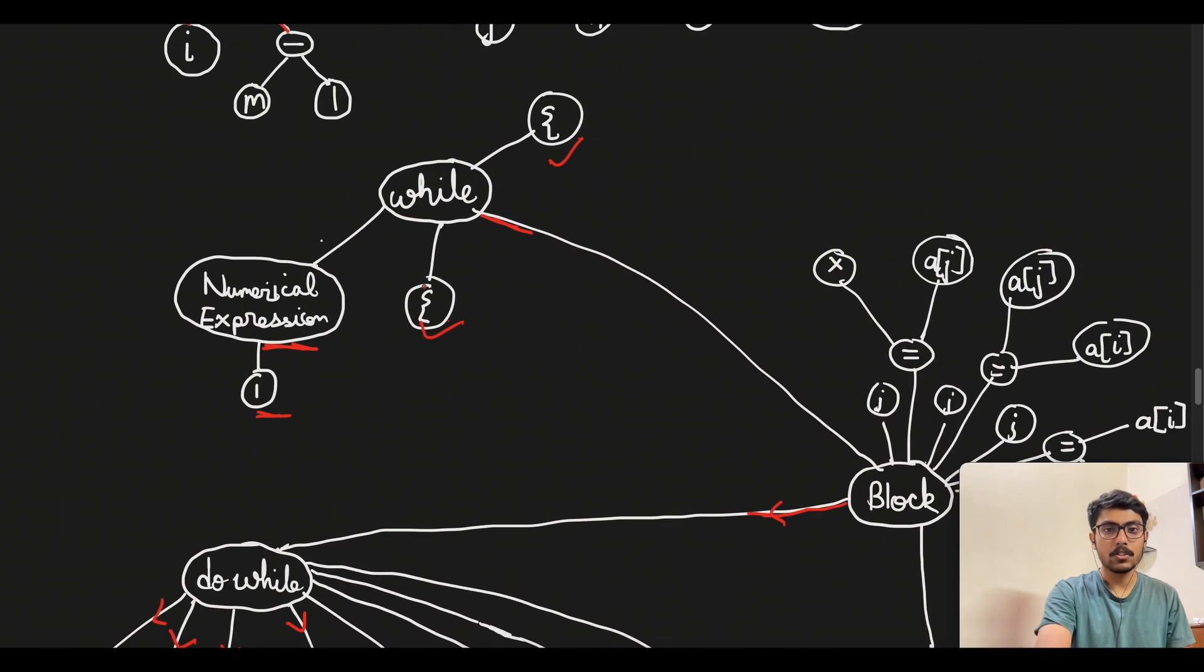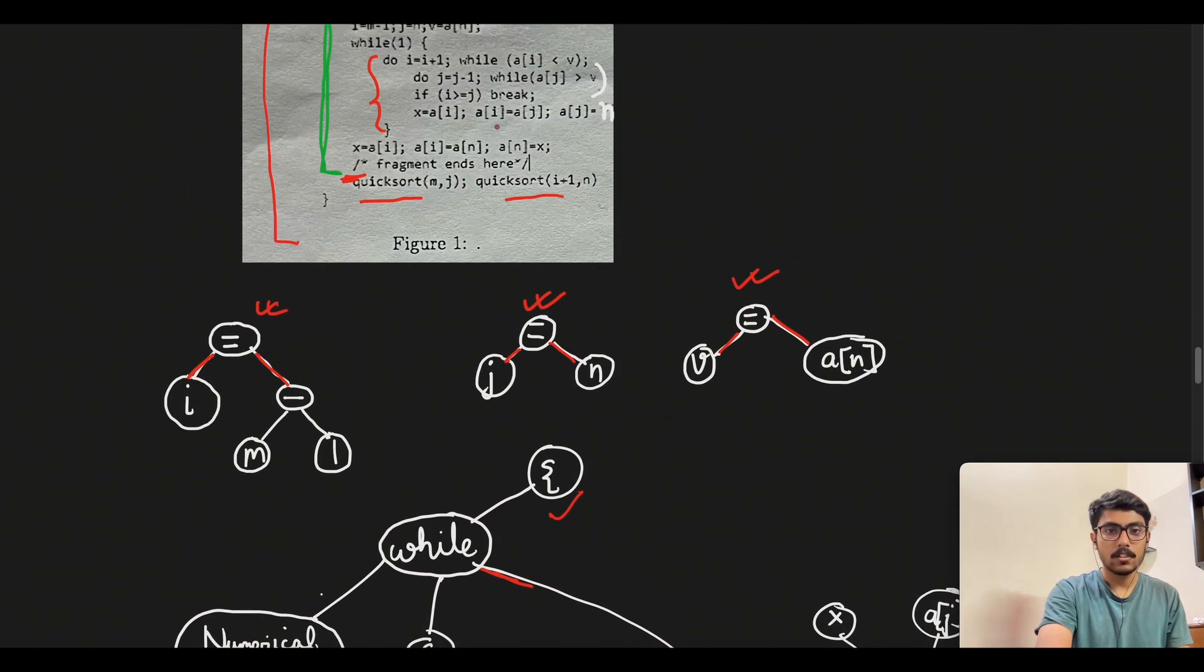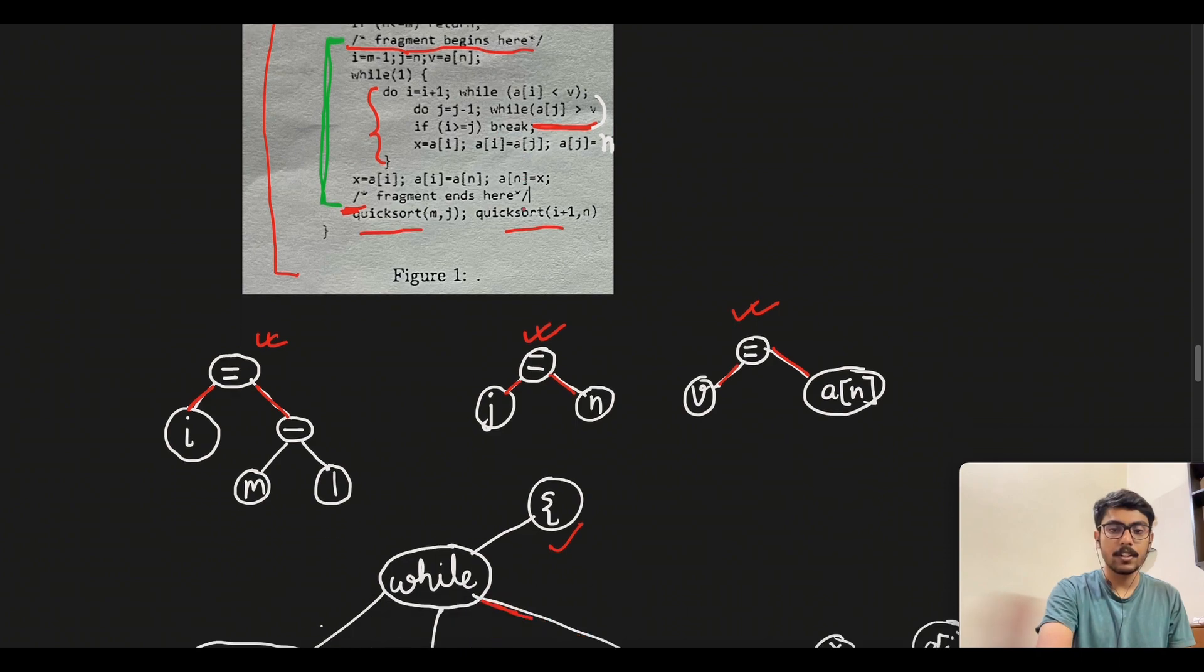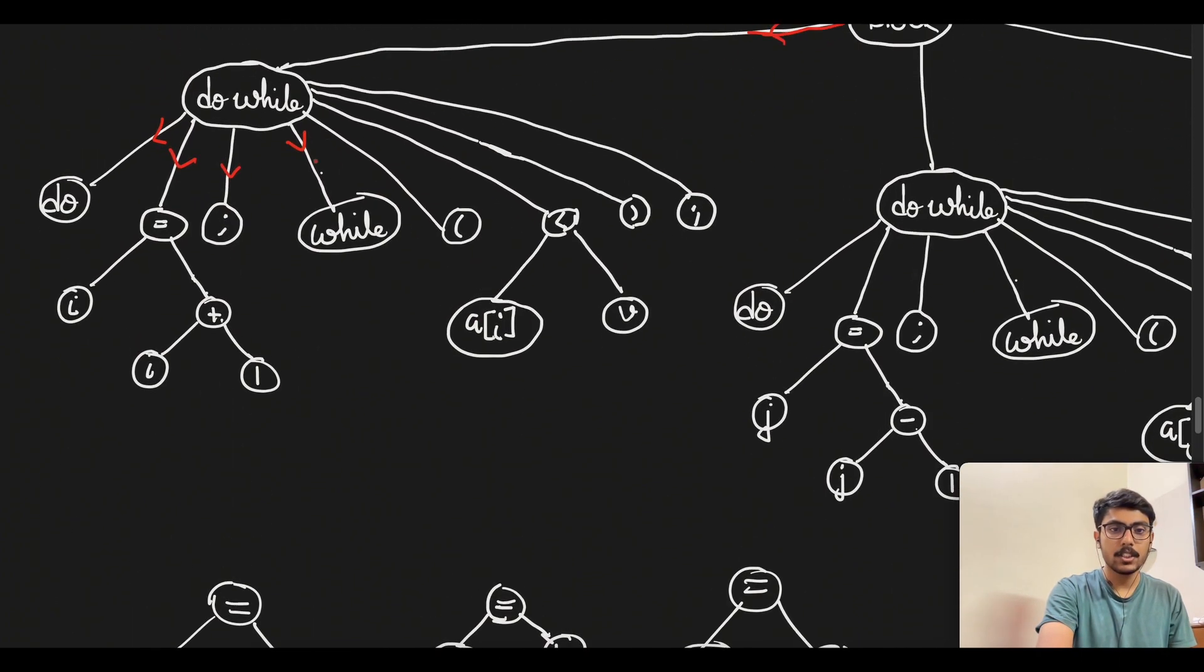Inside the do while block we will have the do, and then we will have i is equal to i plus one and then a semicolon. Similarly while and then the assignment operator which we are checking, which is this particular statement: a of j is greater than v. That we will write after we state the while.